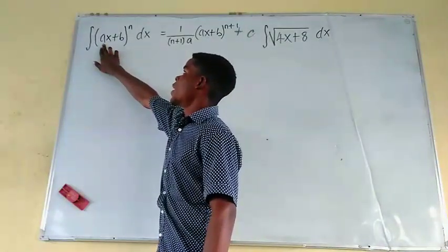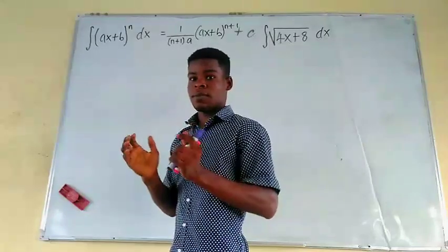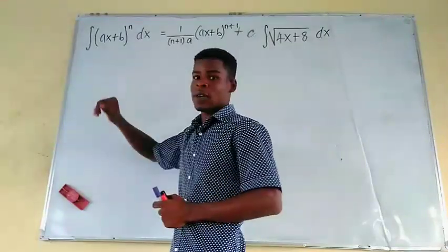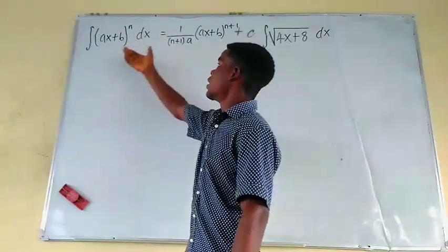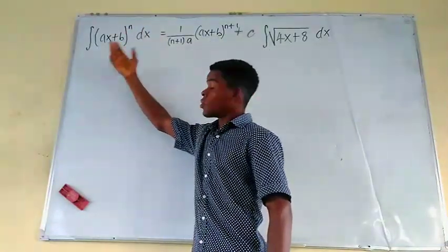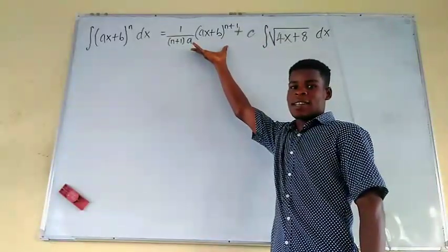Let's say in the form AX plus B, this is a linear function in the bracket, where the highest power of X is just 1, raised to the power of N. Then we are asked to integrate this, and we will just have this as the anti-derivative.